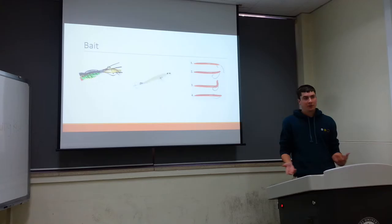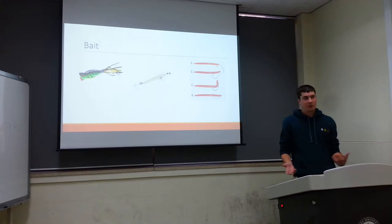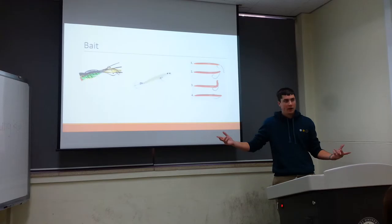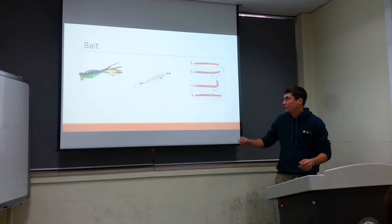The second is a fake minnow. These are very commonly used, and they might not look very flashy, just in that picture, like a white minnow. But in the water, they're made to shine as they wiggle back and forth.